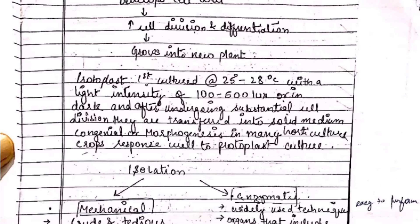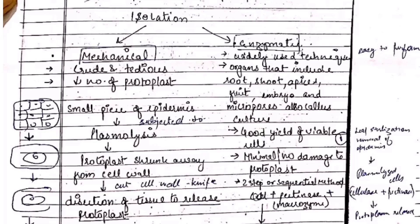The conditions necessary for the growth of protoplasts are: culturing at 25 to 28 degrees Celsius, with light or in the dark, and after substantial cell division they are transferred to a solid medium. The isolation of protoplasts is done in two steps: mechanical and enzymatic — this is a very important part of protoplast culture.